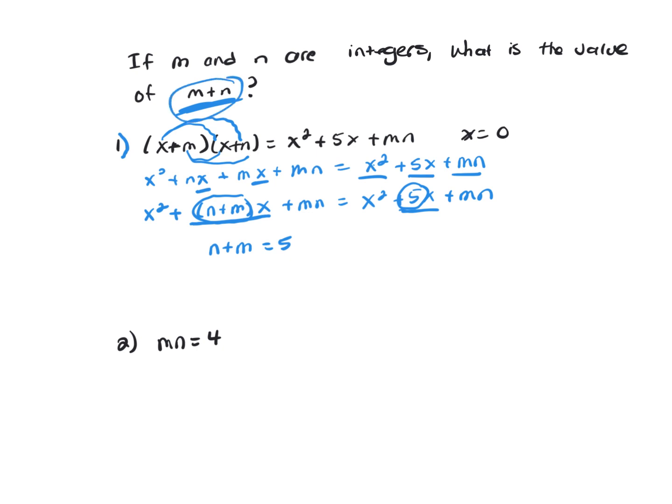So clue one works independently. m and this bottom one does not work, because that could be 2 times 2 gives you 4, or it could be negative 2 times negative 2, or 4 times 1, whatever. So that one doesn't work. So your answer would be A.